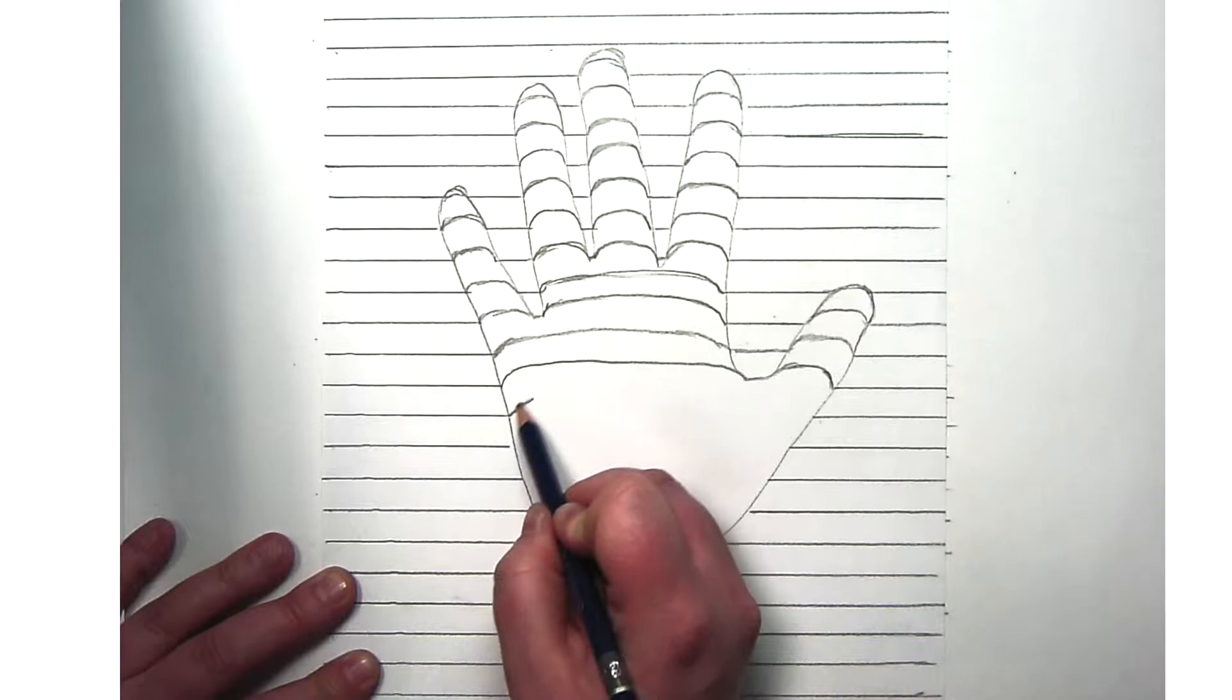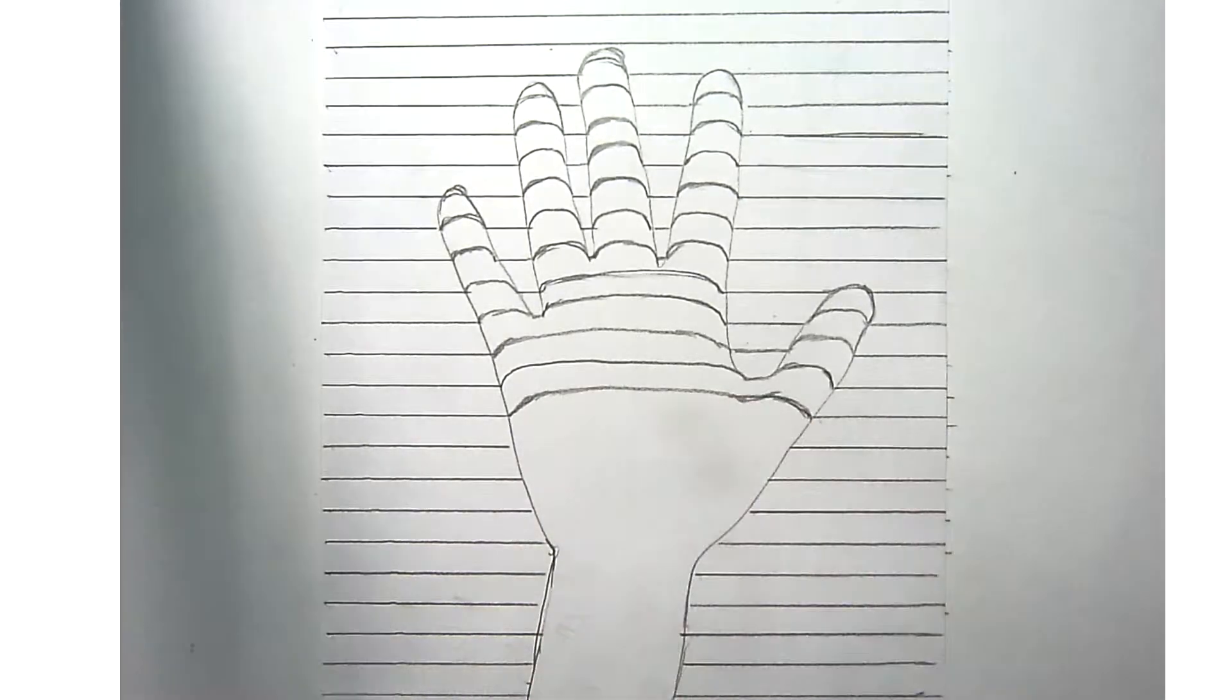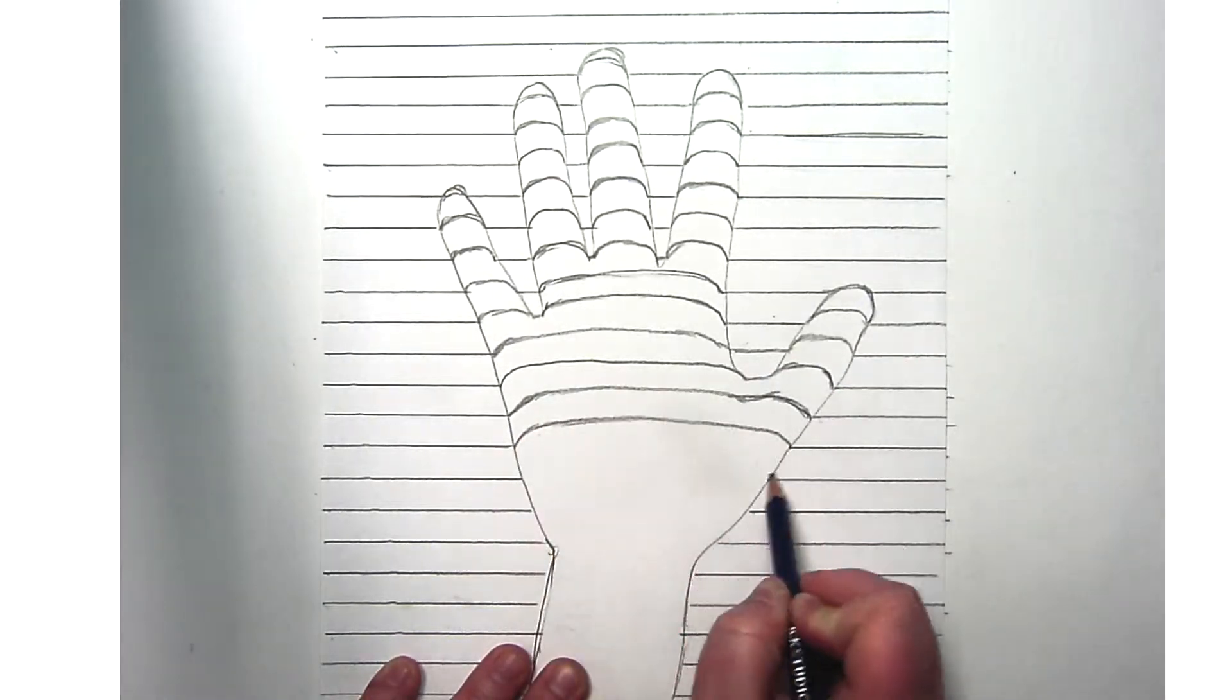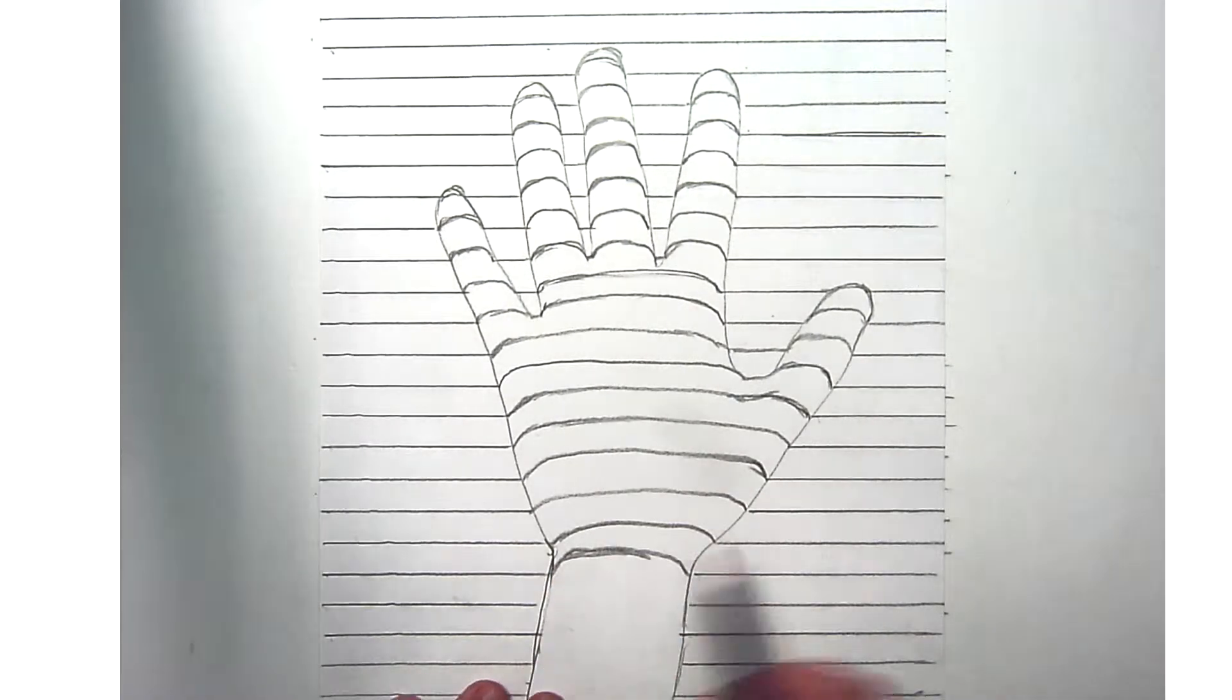Because where we see it rounds is at the edge of the palm, but across the top flat part of the palm, that line should still look relatively flat.